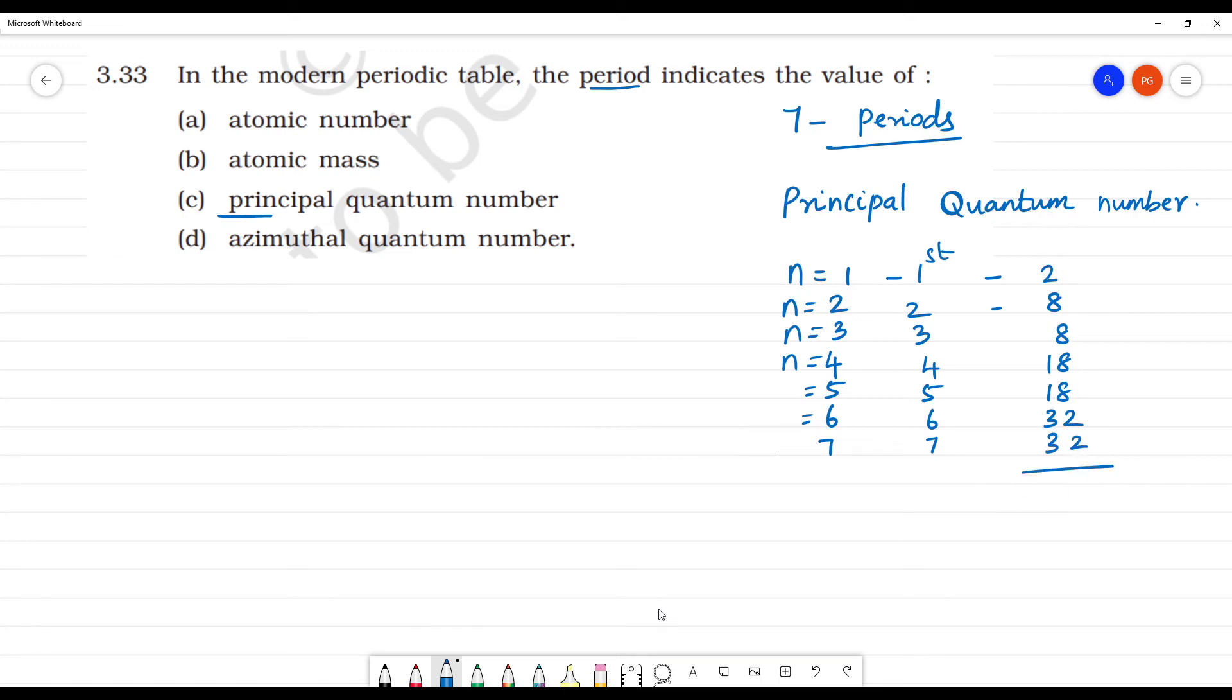So total 118, and it is incomplete and we are going on discovering the elements. Clear?